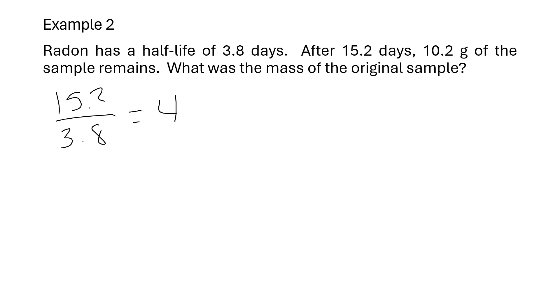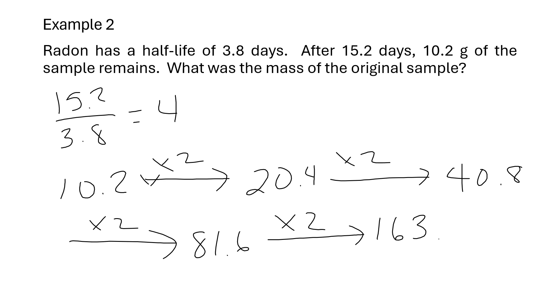So that means it went through four half-lives to get down to 10.2. Well, since we have the ending amount and we don't have the beginning amount, we've got to go backwards. So we're not going to divide by 2, but we're going to multiply by 2. We're going to do it four times because we know it went through four half-lives. So we take 10.2 and multiply it by 2 and we get 20.4. Then once again multiply by 2 and we get 40.8. Then multiply by 2 again and we get 81.6 grams. One more time, this is the fourth time, multiply by 2 and we get 163.2 grams. That's how much of the original sample there was.